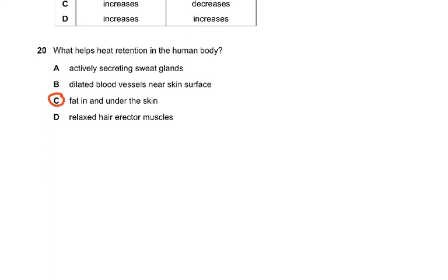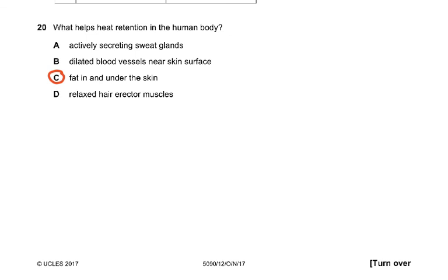Question 20: what helps heat retention in the human body? Fat in and under the skin is the main insulating layer — like a hot pot keeping something warm. Sweating cools the body down, vasodilation causes more heat loss, and relaxed hair erector muscles also do not retain heat.